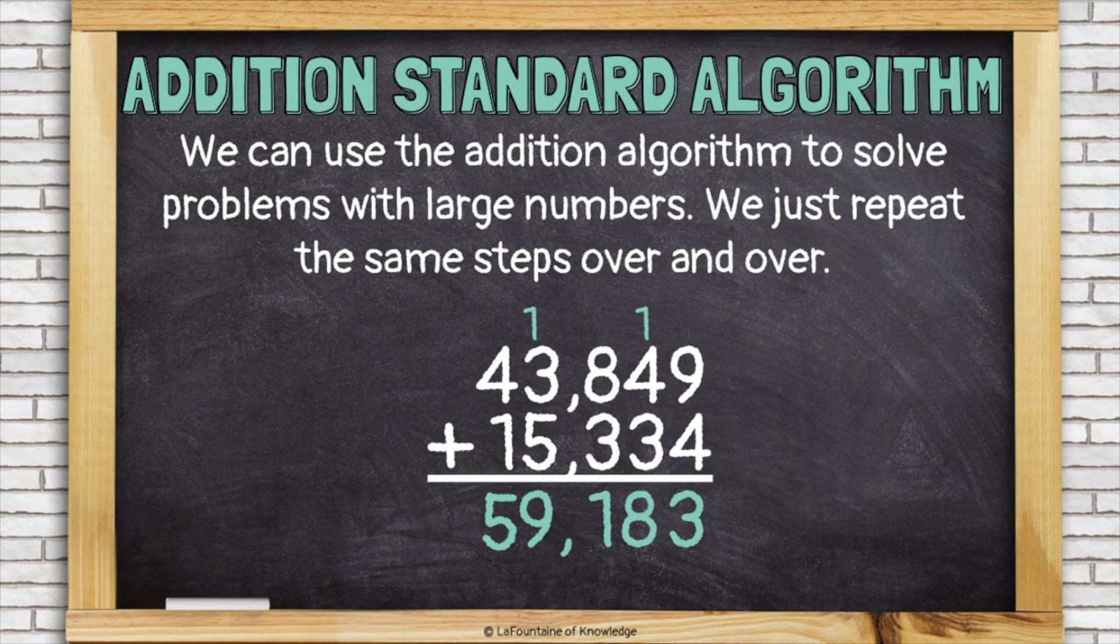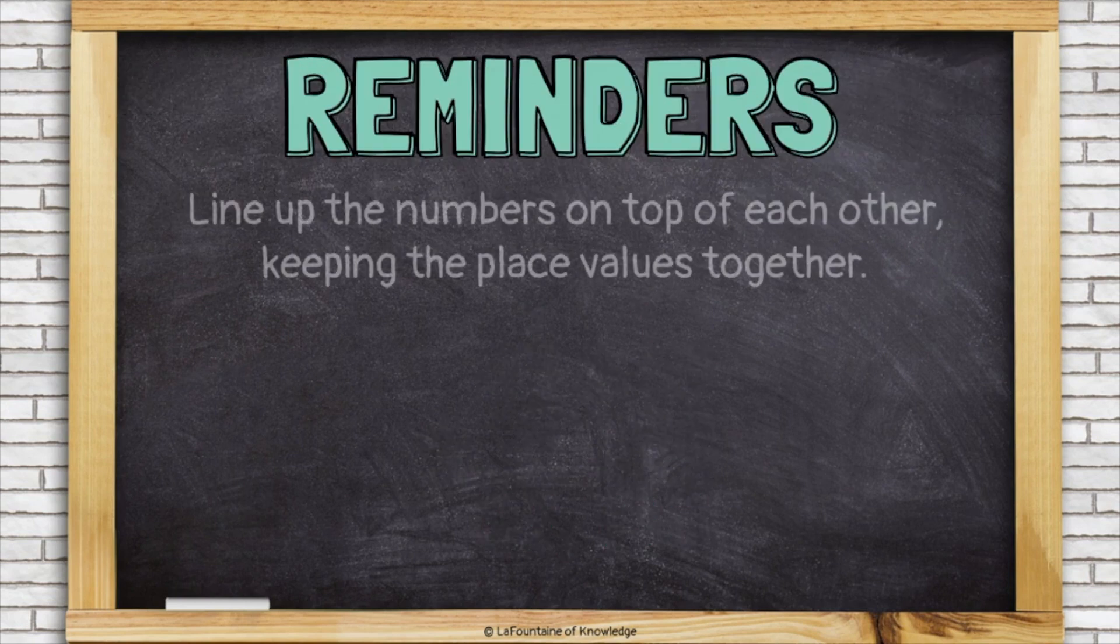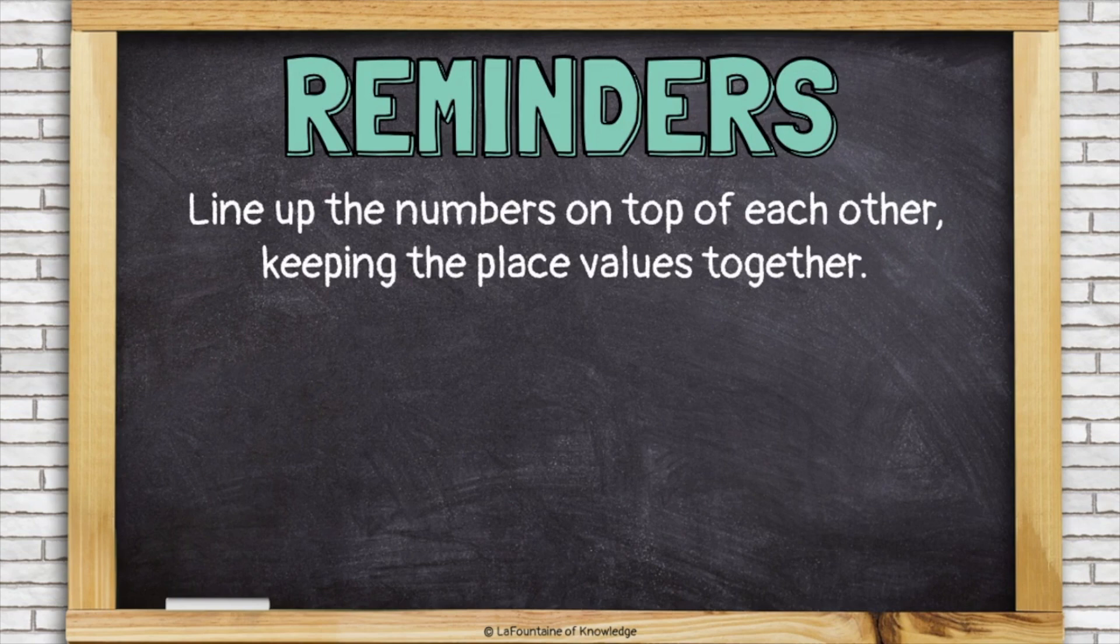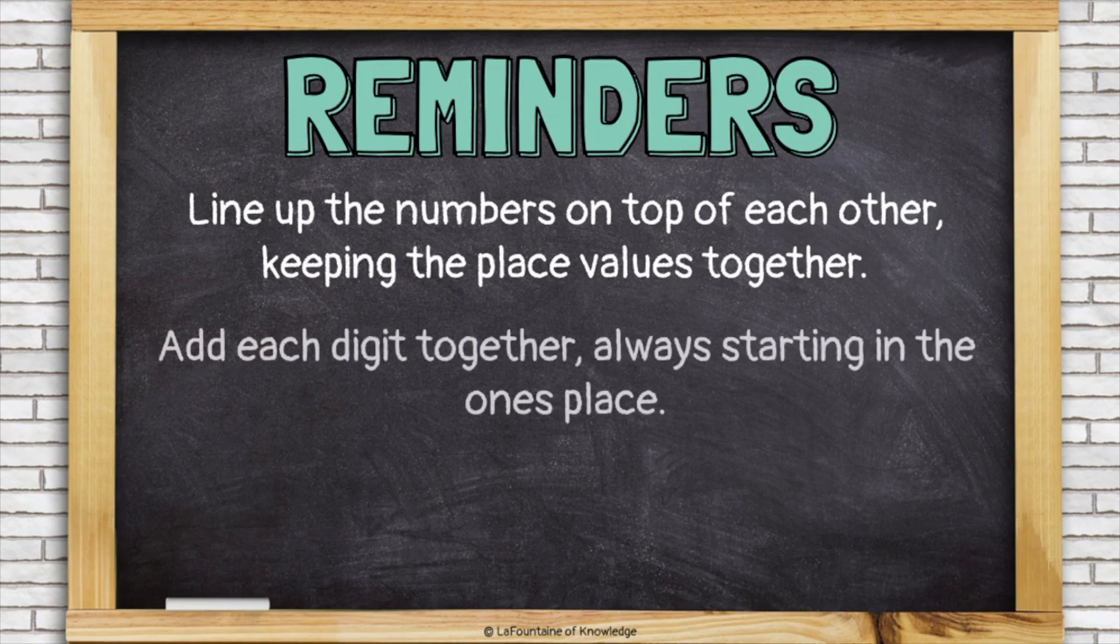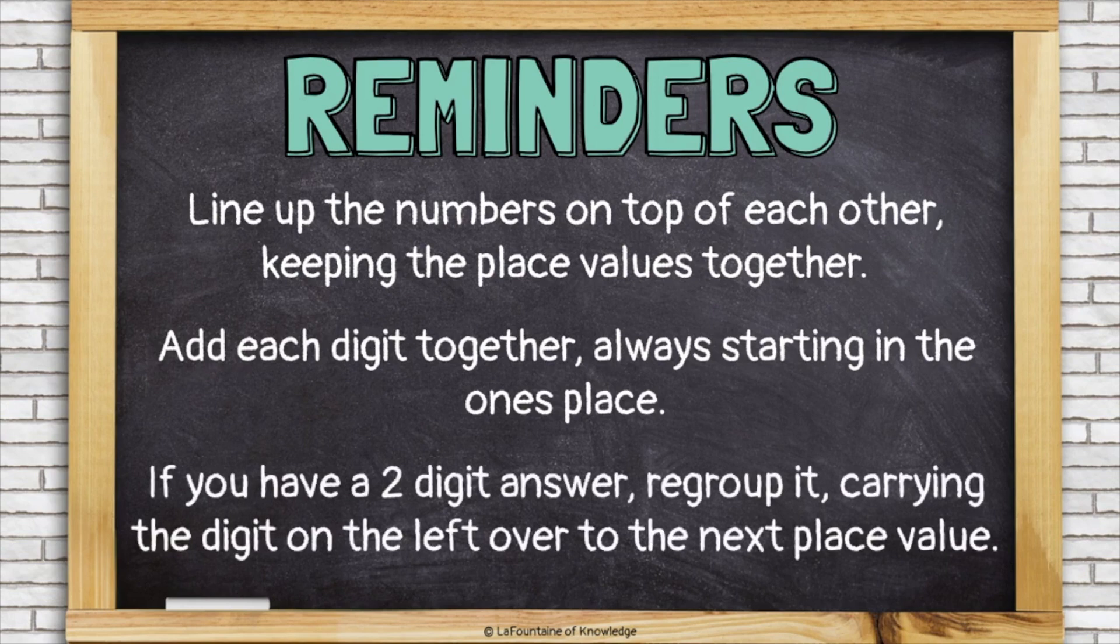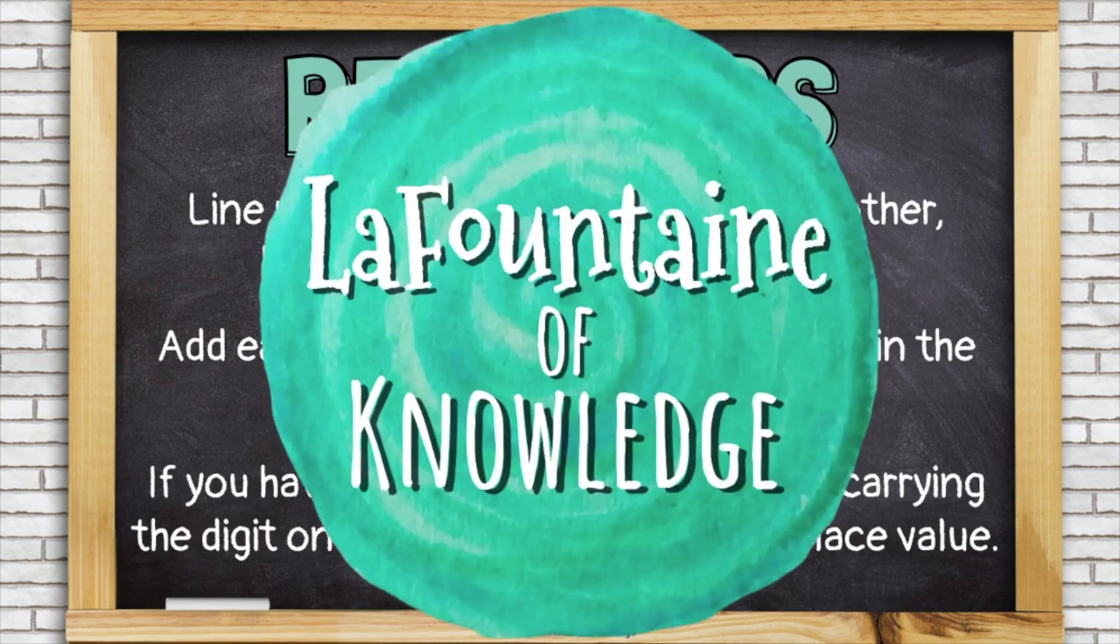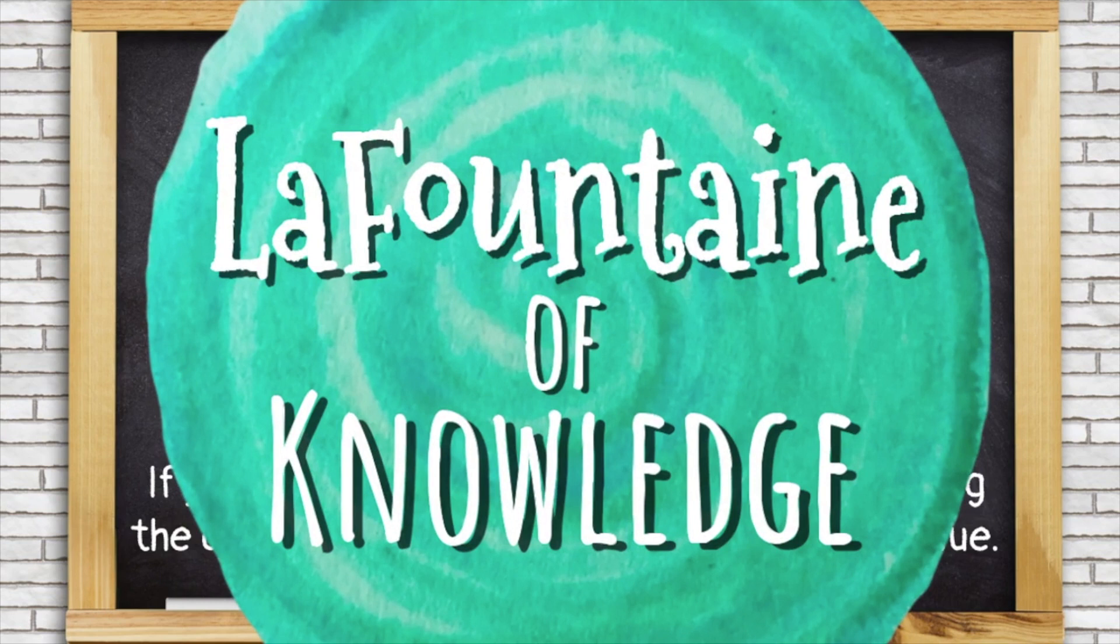Let's review. Line up the numbers on top of each other, keeping the place values together. Add each digit together, always starting in the ones place. If you have a two digit answer, you have to regroup it, carrying the digit on the left over to the next place value.